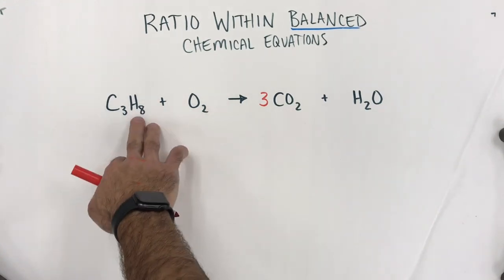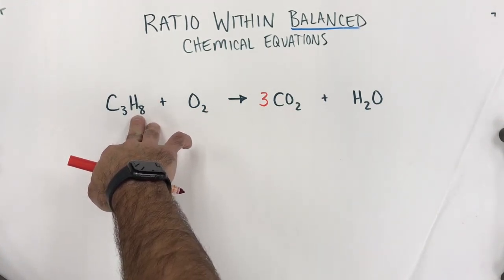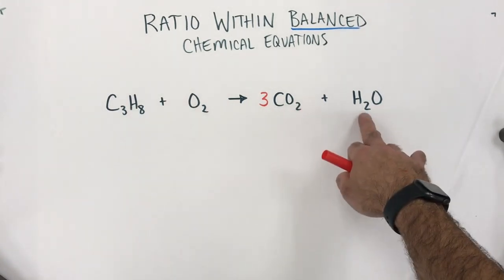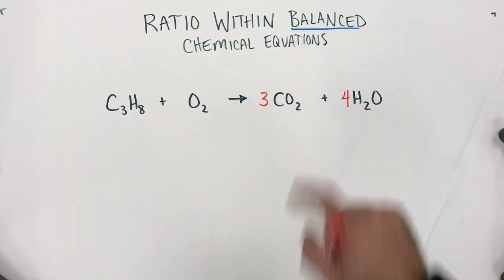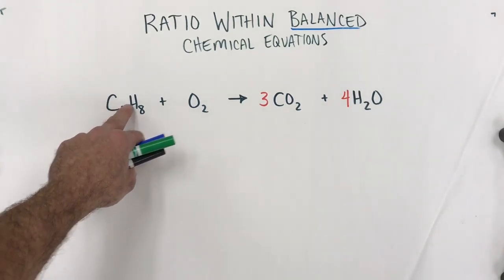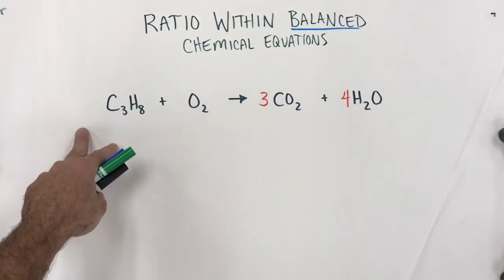We're good. Checking hydrogen next, eight hydrogen atoms becoming only two. That's a problem. Let's put a four here. So, now that's eight hydrogen atoms. So, that balances hydrogen.